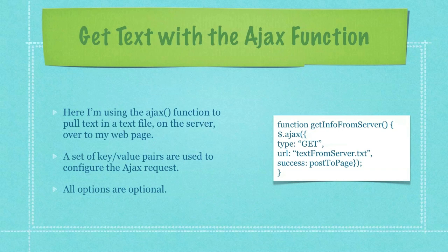Here I'm using the Ajax function to pull text from a text file on the server over to my web page. A set of key-value pairs are used to configure the Ajax request. All options are, of course, optional.